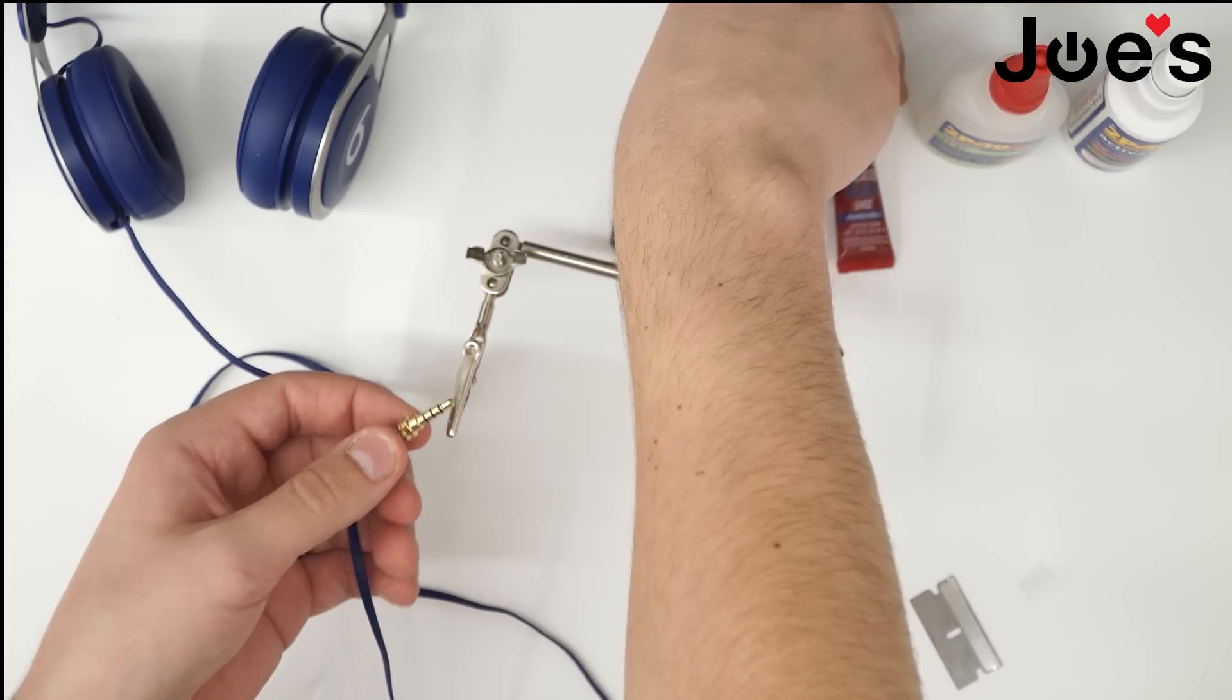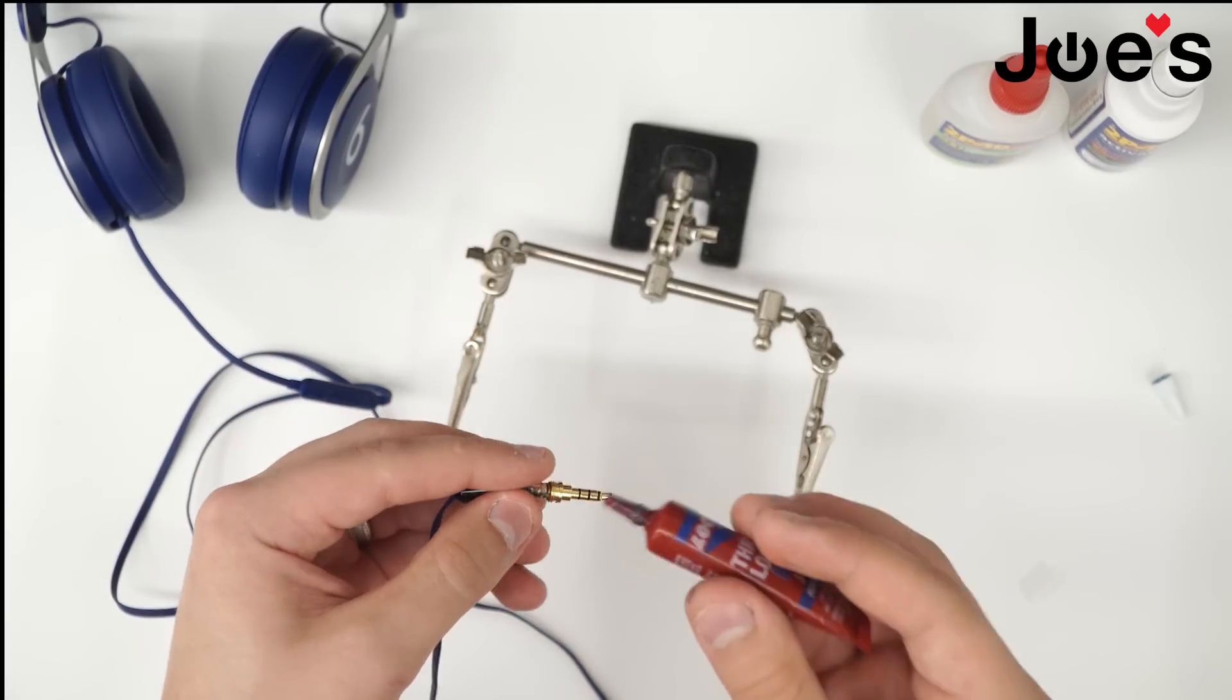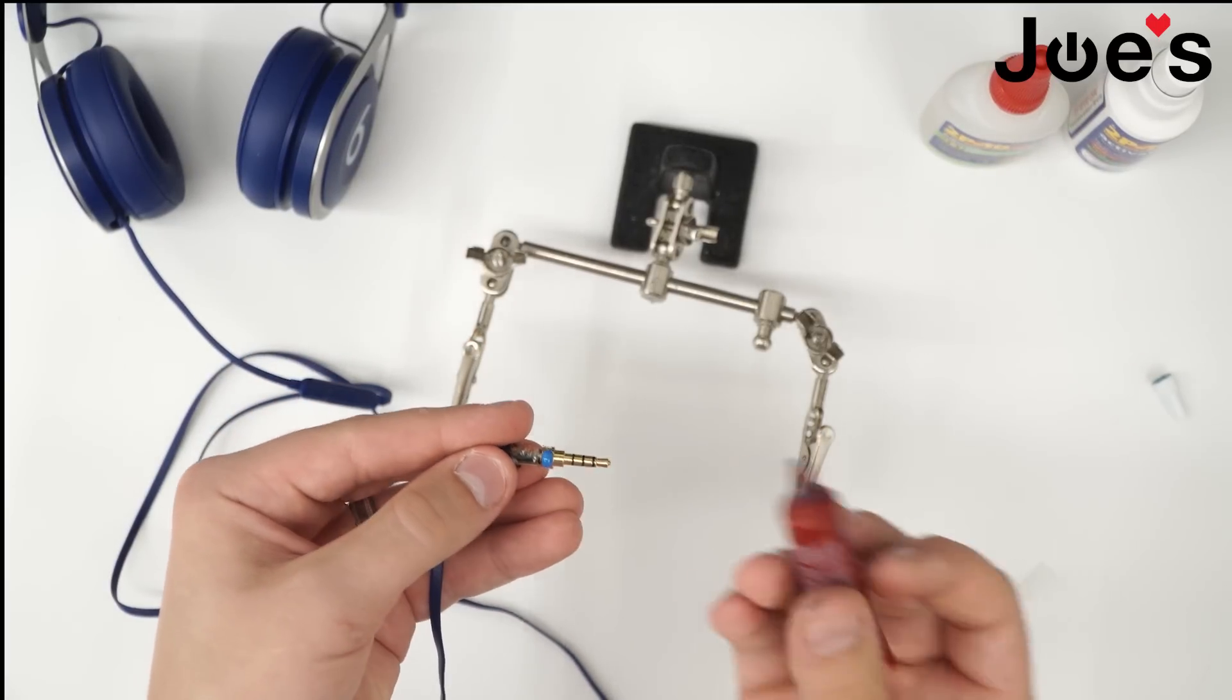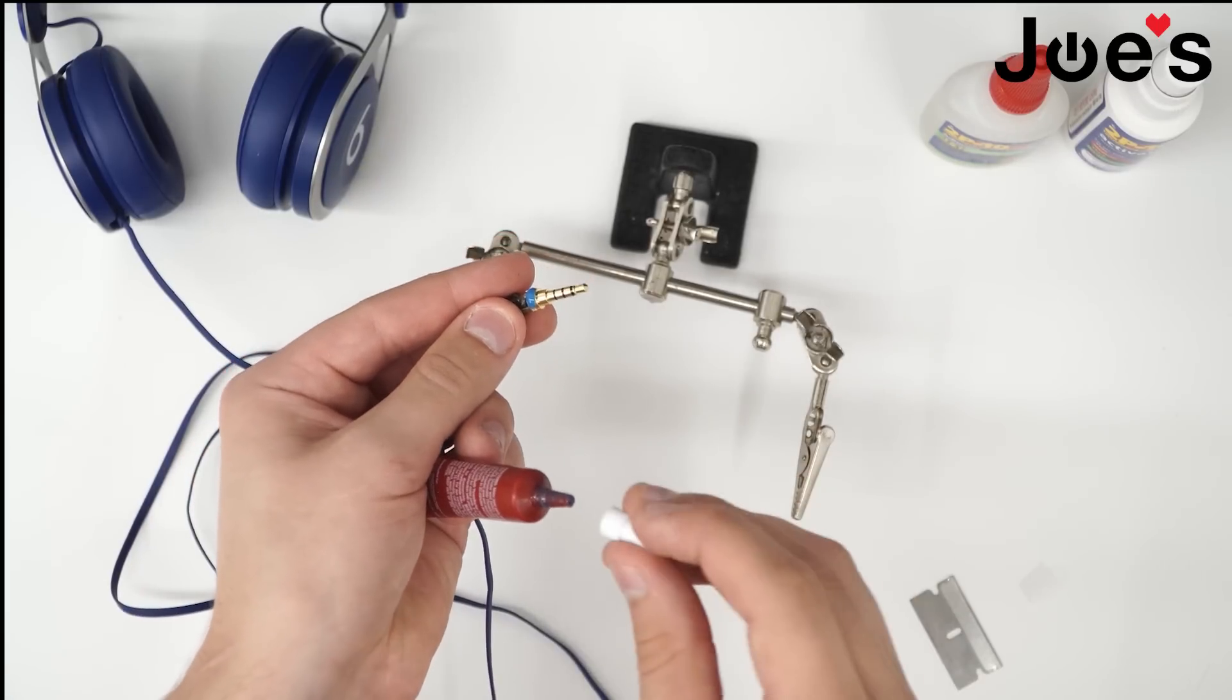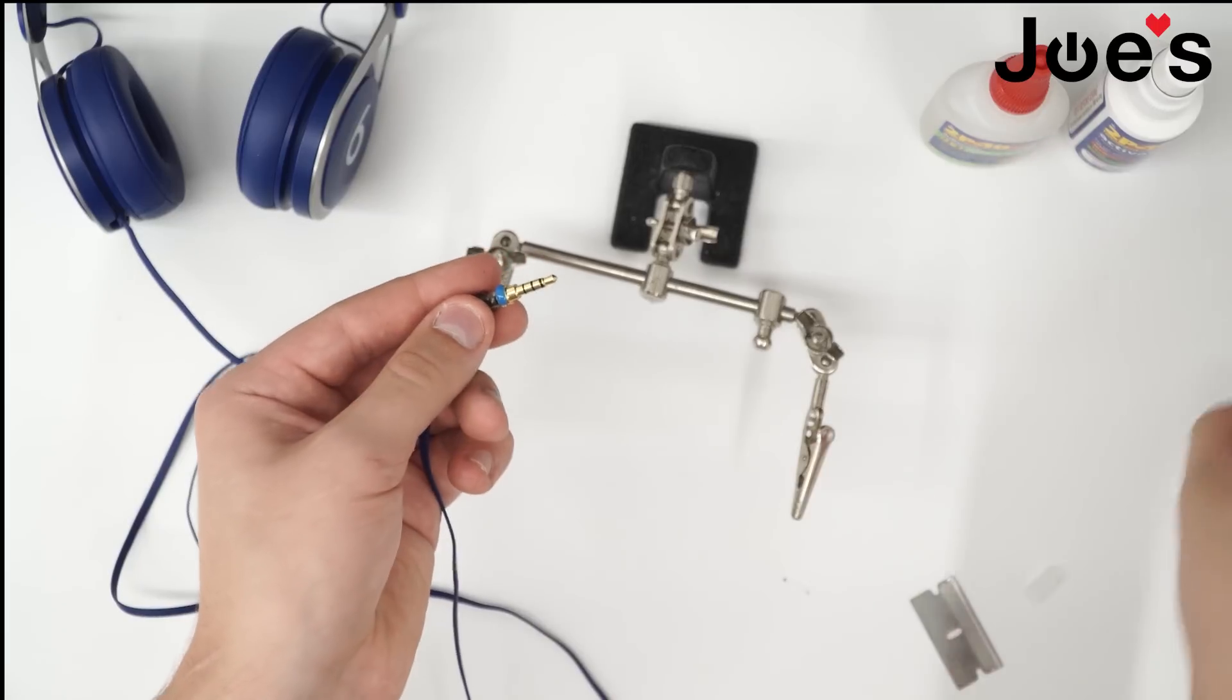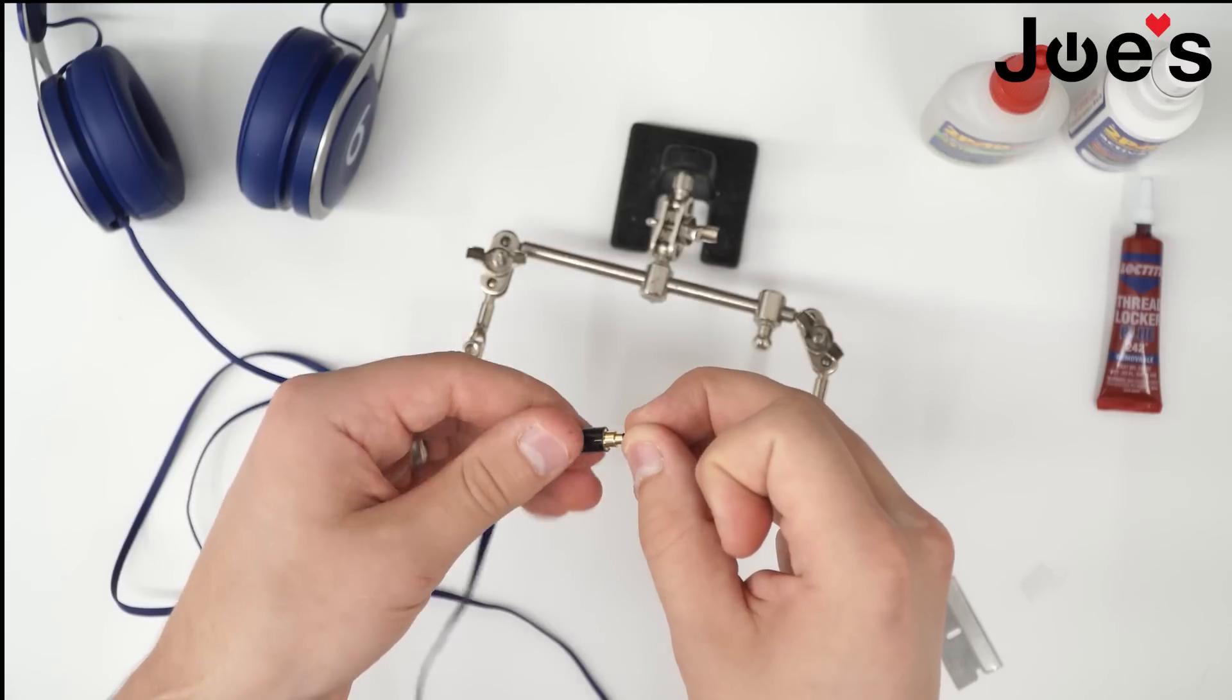After that, take some Loctite for the threads. Apply it on the threads. A drop. Screw in the jack.